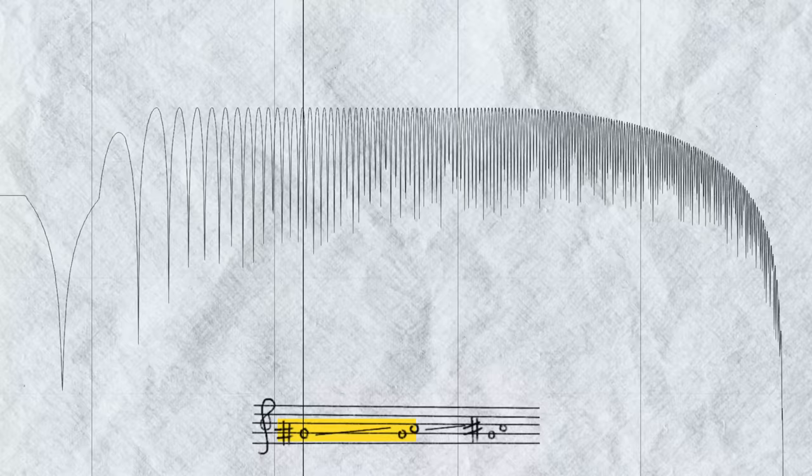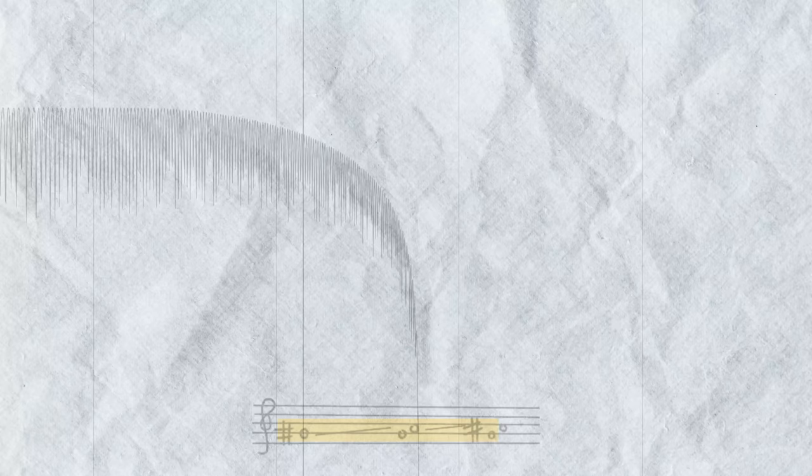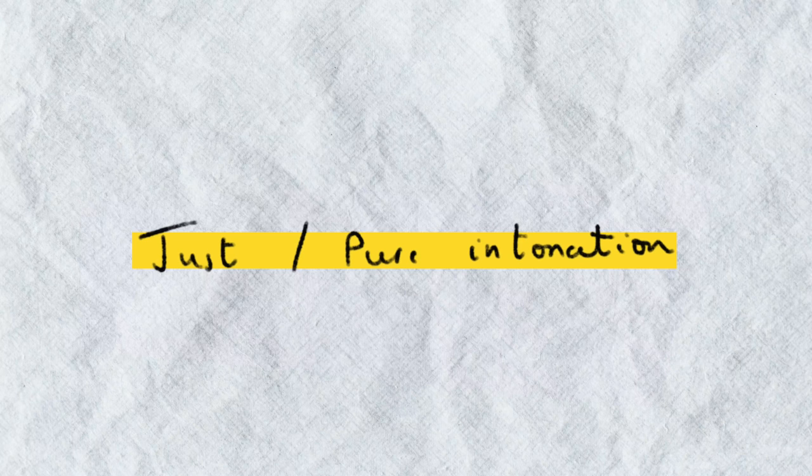So, to avoid this and to achieve an in-tune chord, you need to ensure that the frequency of each note within the chord lines up with the harmonics of the other complex tones, leading to a tuning system known as just or pure intonation. And this can only really be done by altering intonation in real time.